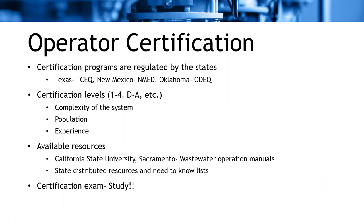Before we talk about the general wastewater overview, I want to touch on operator certification. Operator certifications are typically overseen by state environmental departments. Some examples from EPA Region 6 are the Texas Commission of Environmental Quality, the New Mexico Environmental Department, and the Oklahoma Department of Environmental Quality. There is also EPA operator certification, designed to have reciprocity with state levels and utilized by communities such as tribes and smaller communities not overseen by states. Each agency has its own level hierarchy based on system complexity, population, and years of experience required.